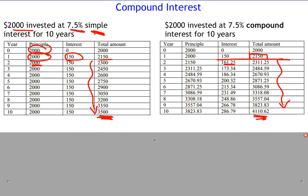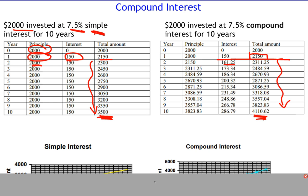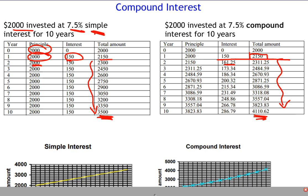You can see that after ten years there's a fairly significant difference in the amount of money you get from investing with compound interest rather than simple interest. Let's go through an example of how we can actually calculate the amount of money you have using compound interest.